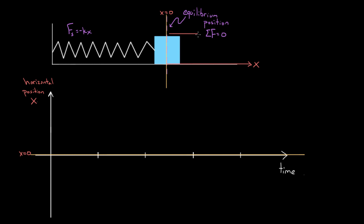And then if I pull this mass to the right, I'm essentially going up on this graph because I'm going toward positive horizontal positions. And if I push this mass to the left, I'm essentially going down toward negative horizontal positions on this graph.